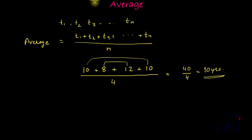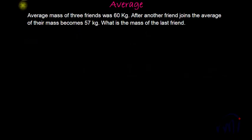I am going to take two questions in this video. Let me take the first one. The first question says average mass of three friends was 60 kgs. After another friend joins, the average of their masses becomes 57 kgs. What is the mass of the last friend? Here we have three friends, so let me assume them as friend 1, friend 2, and friend 3, and let f1, f2, f3 be their respective masses.